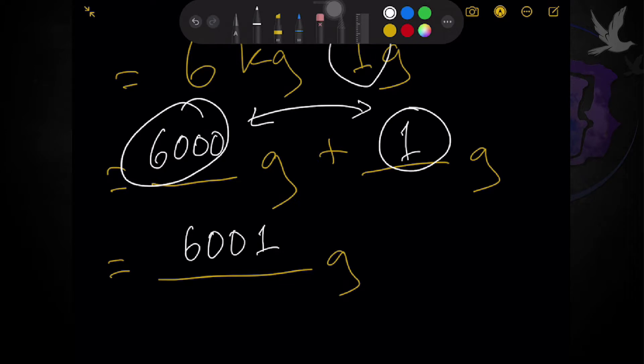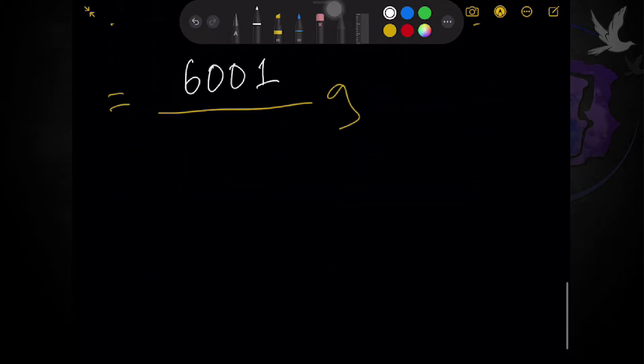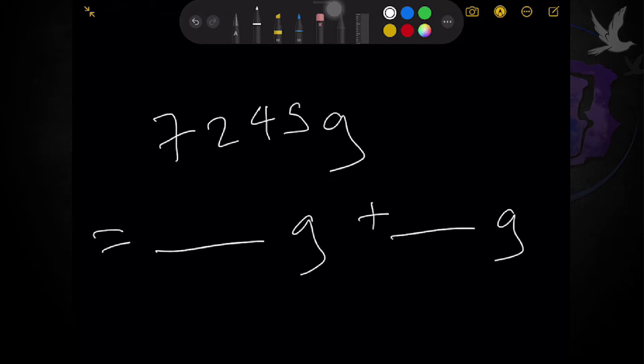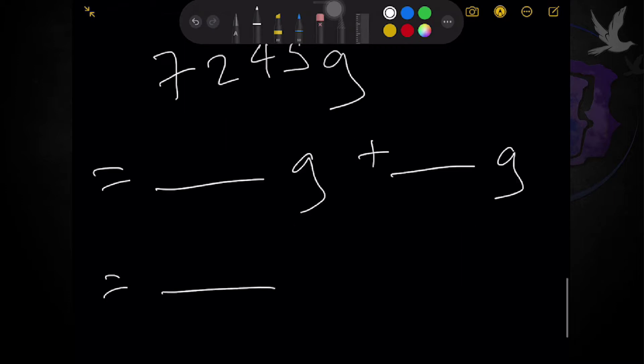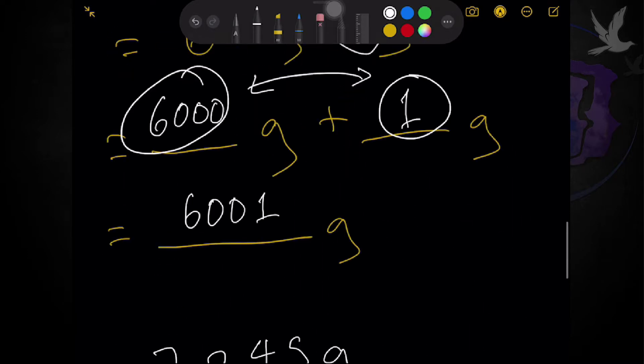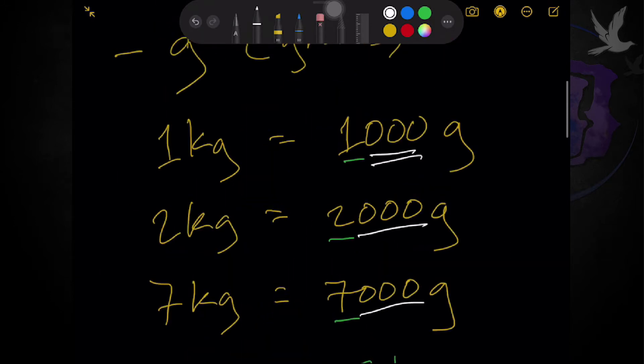And doing the opposite, expected na yan sa next page natin. Doing the opposite, converting grams. Let's say 7,245 grams. Converting it muna. Isaseparate natin muna by gram. And later on, finalizing it by kilograms and grams. So, if you observe, conversion unit natin comes in thousands.